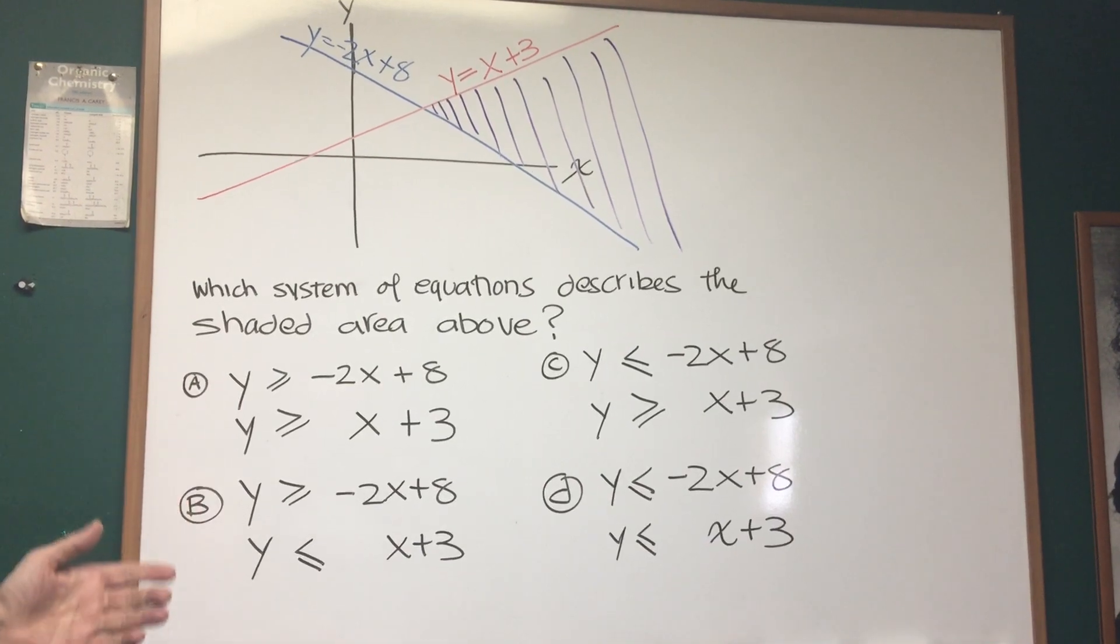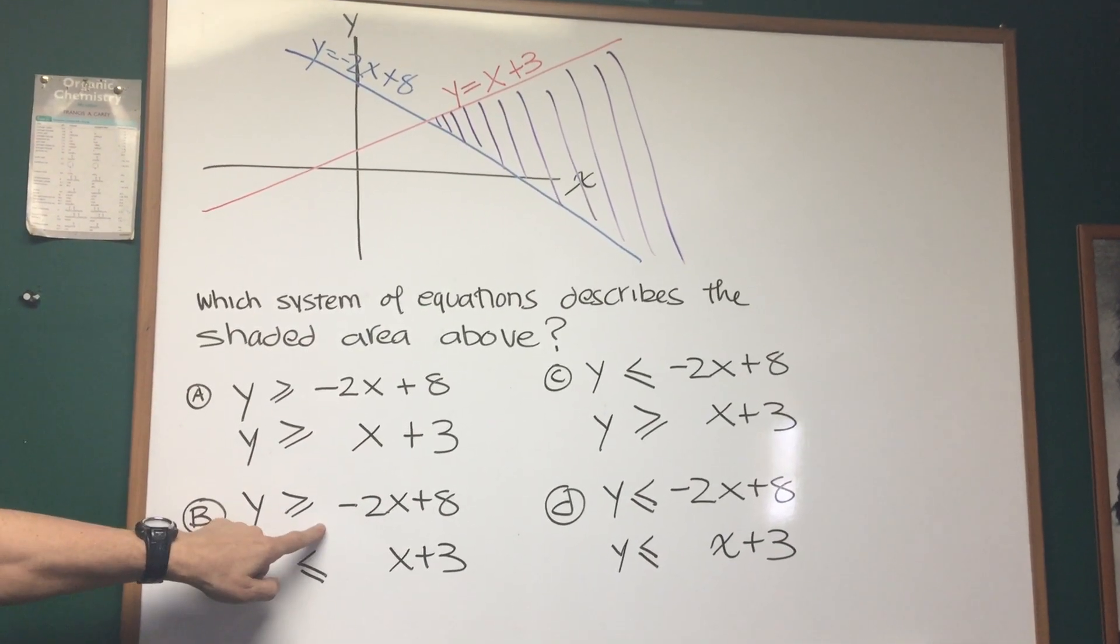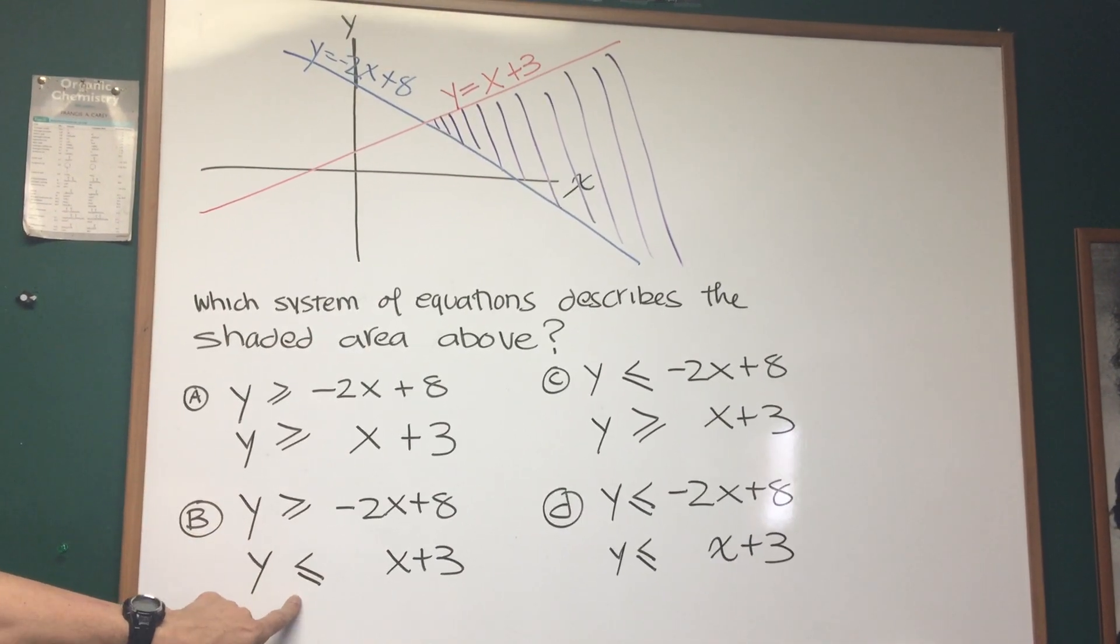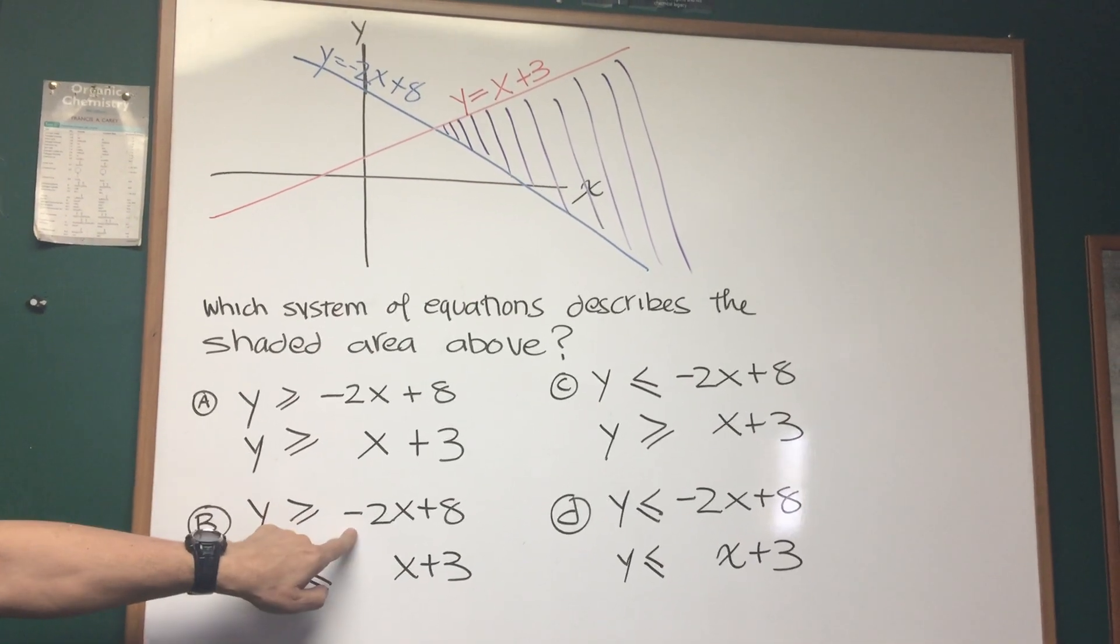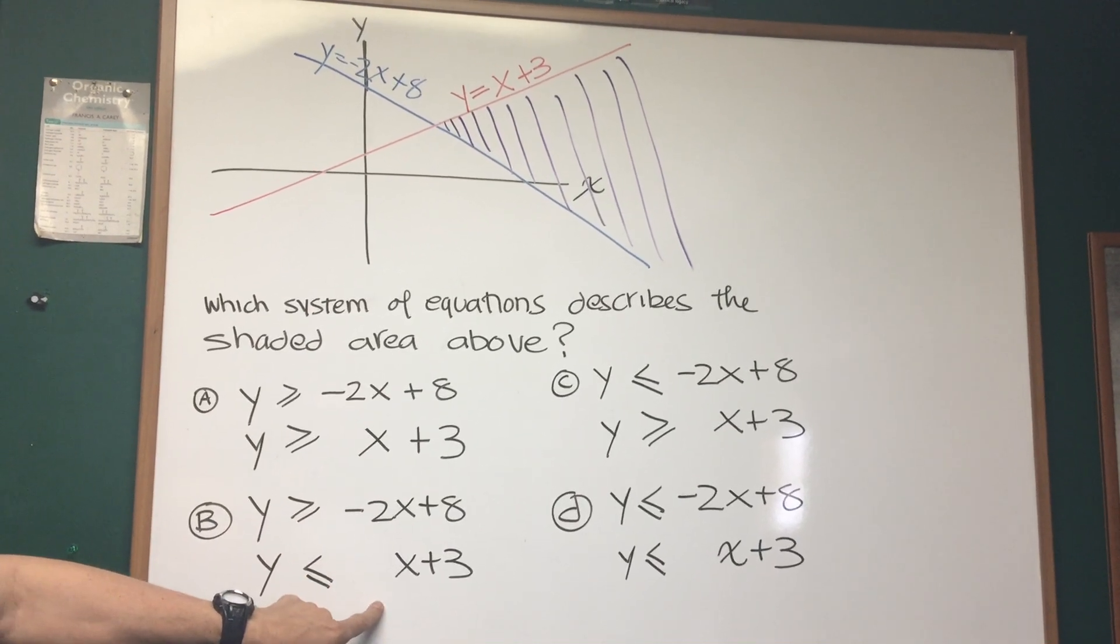So we want a choice where we're lying above negative 2x plus 8, y is greater than negative 2x plus 8, but less than x plus 3, above the line of a negative slope and below the line of positive slope.